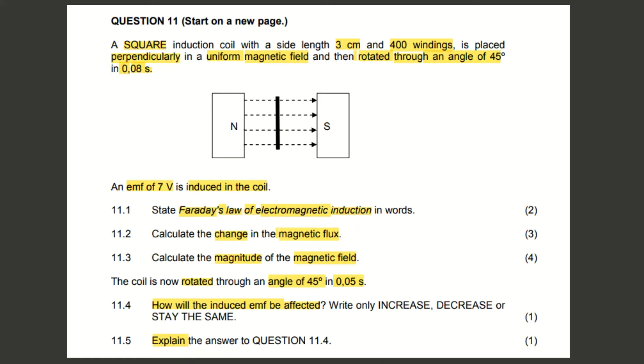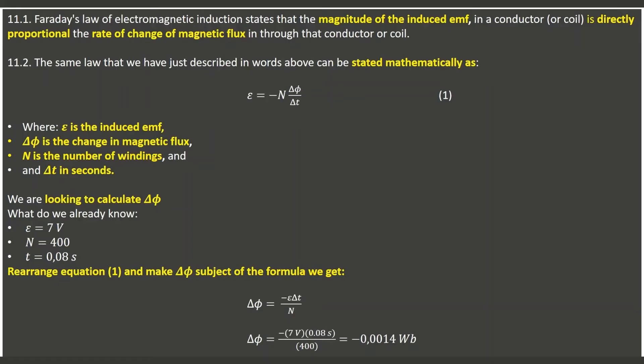From Part 2 of electromagnetism, Faraday's law of electromagnetic induction states that the magnitude of the induced EMF is directly proportional to the rate of change of the magnetic flux.